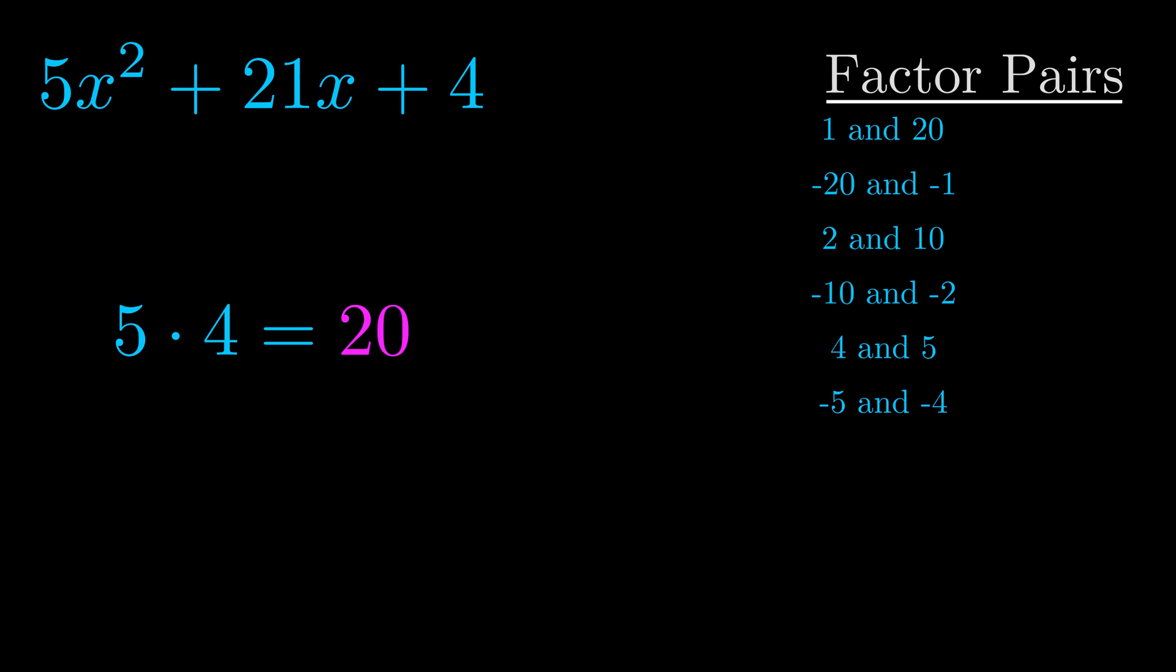The b value is the coefficient on the x term. That's the middle term, the one that we haven't done anything with yet. And really this is the only factor pair that we need.